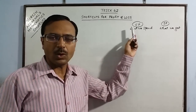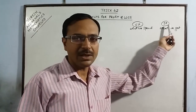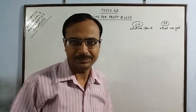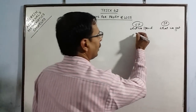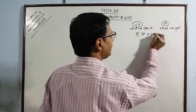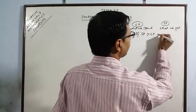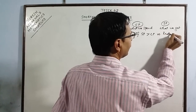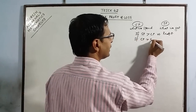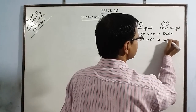CP, cost price, is what we pay. And SP, selling price, is what we get on selling a particular item. Obviously, if SP is greater than CP — if we get more and spend less — we have profit. And if CP is greater than SP — that is, what we spend is more than what we get — obviously there is loss.